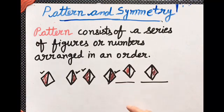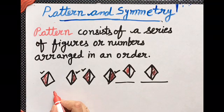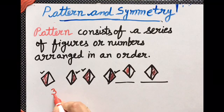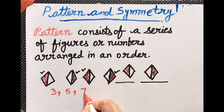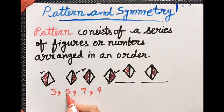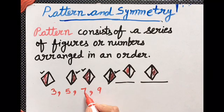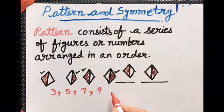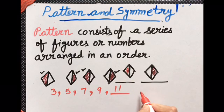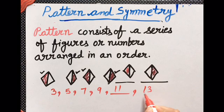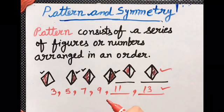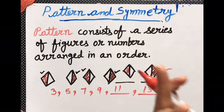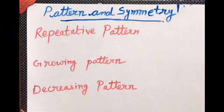That means in which numbers, like if we can take the example of numbers also: three, five, seven, nine. So three plus two is five, five plus two is seven, seven plus two is nine, and nine plus two is eleven, eleven plus two is thirteen. So these are the numbers or figures. Pattern can be a number or can be a figure or can be anything.